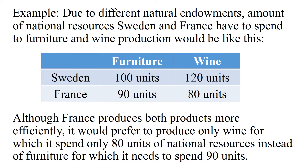Another example — a commonly given example in the literature, as well as in your textbook — is the difference between Sweden and France. These are two countries in Europe with distinctly different climates. Sweden has a much colder climate in northeastern Europe, while France has a warmer, Mediterranean climate, at least in its southern parts, in western Europe. If we are considering furniture manufacturing and wine production, we would have a picture like the one shown in this table.